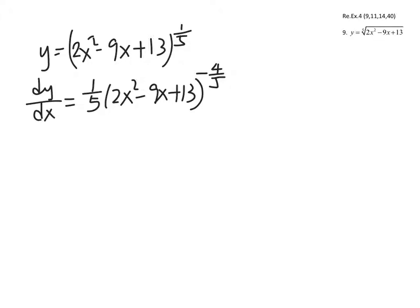The reason I do this is the same principle as differentiating x to the power of negative 5 — you bring down the power and reduce it by 1, then multiply by the derivative of the inside.